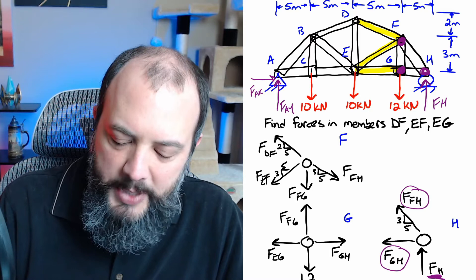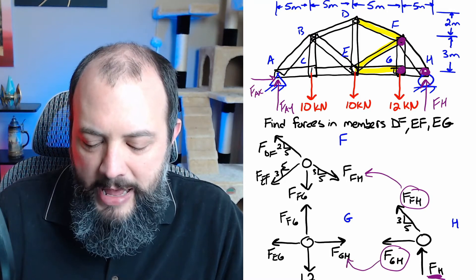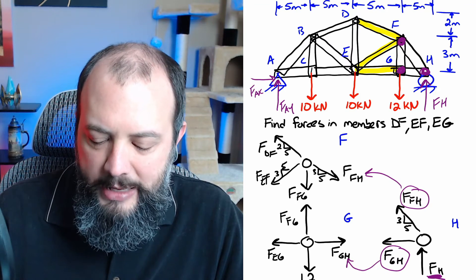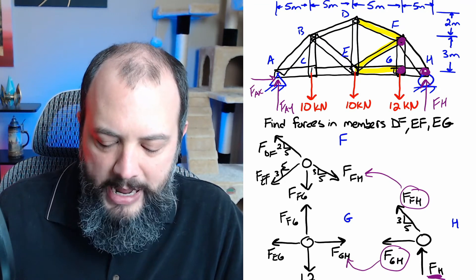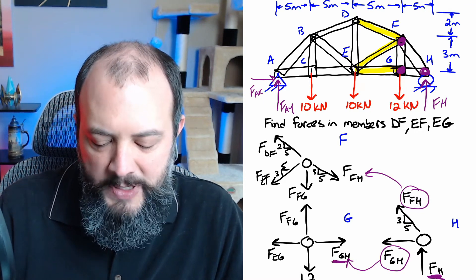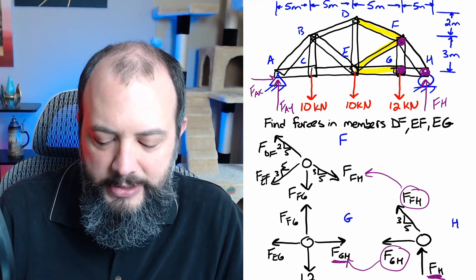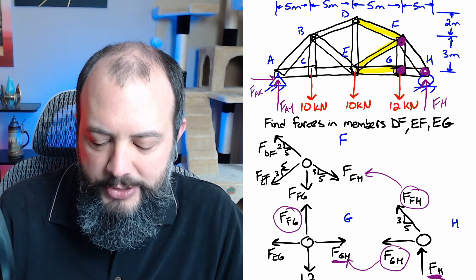Once you know those two those become known on the other free body diagrams as well. Free body diagram F still has three unknowns so we can't go there yet but we can go to free body diagram G where now there are two known values the 12 and the FGH and two unknowns. So a sum of forces in the Y direction would let you solve for FFG and a sum of forces in the X direction will let you solve for FEG and in fact that FEG is one of the final answers.